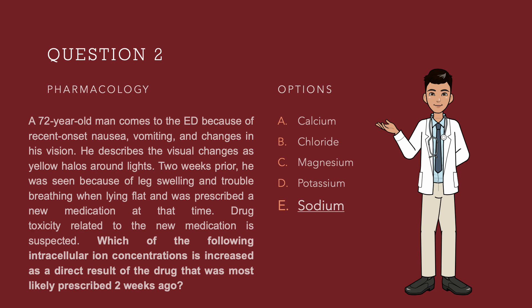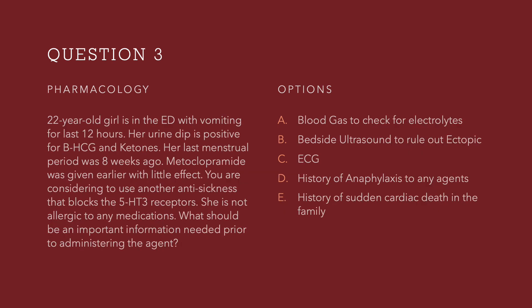Let's move on to question number 3. What should be important information needed prior to administering the agent? A 22-year-old girl is in the ED with vomiting for the last 12 hours. Her urine dip is positive for beta-HCG and ketones. Her last menstrual period was 8 weeks ago. Metoclopramide was given earlier with little effect. You are considering using another anti-sickness agent that blocks the 5-HT3 receptor. She is not allergic to any medications. Options: blood gas for electrolytes, bedside ultrasound to rule out ectopic, an ECG, history of anaphylaxis to any agents, or history of sudden cardiac death in the family. Take a 10-second pause.